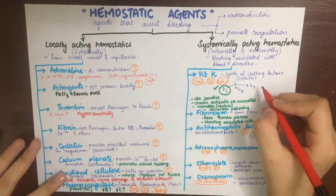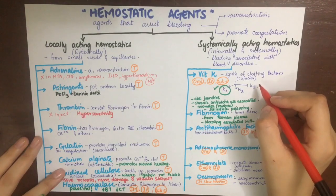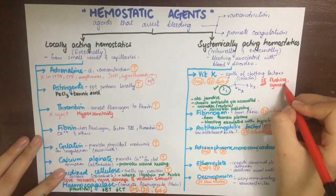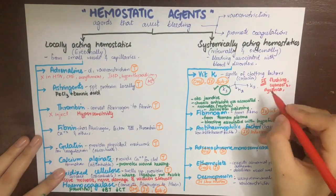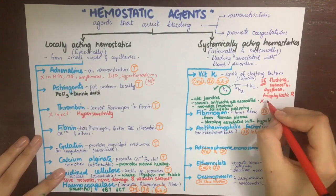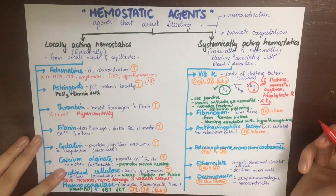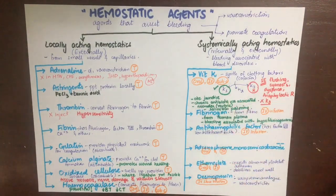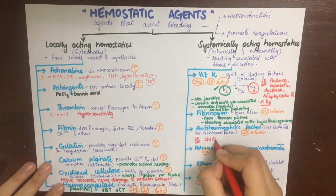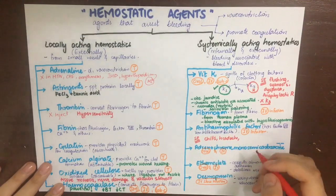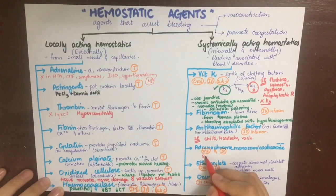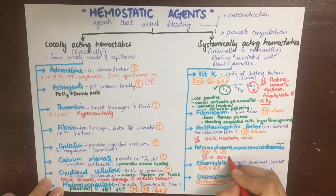Regarding side effects: K3 (menadione) causes flushing, cyanosis, dyspnea, and anaphylactic reactions, and therefore should not be used; vitamin K1, known as phytonadione, should be used instead. Anti-haemophilic factor causes side effects such as chills, headache, and rash. Adrenochrome mono-semicarbazone causes side effects such as skin rash, low blood pressure, and headache. That's all about hemostatic agents.